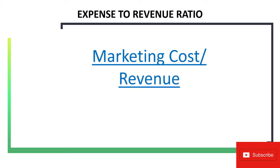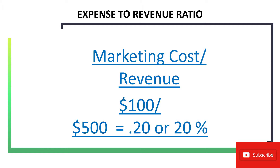The advertising-to-sales ratio is a great way for an ecommerce website to track the effectiveness of your marketing and advertising spend. The formula is pretty simple — these numbers are usually available from your financial statements or inside your advertising platforms. It is total marketing cost or advertising cost divided by revenue. In this example, $100 in marketing cost divided by $500 in total revenue gives an expense-to-revenue ratio of 0.2, or 20%.